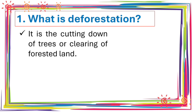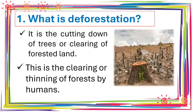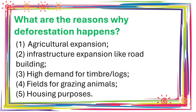Deforestation is the cutting down of trees or clearing of forested land. This is the clearing or thinning of forests by humans. What are the reasons why deforestation happens? First, agricultural expansion. Second, infrastructure expansion like road building. Third, high demand for timber or logs. Fourth, fields for grazing animals. Fifth, housing purposes.